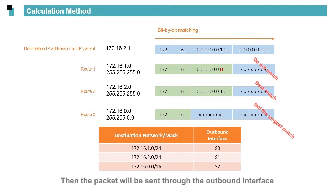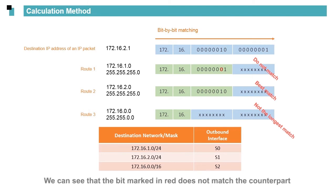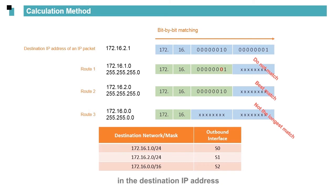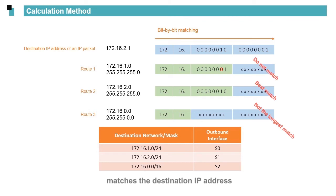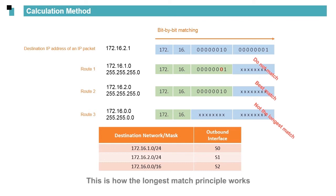Then we need to compare the binary destination IP address and the binary prefixes of the routes to locate the route whose prefix has the longest bits matching those of the destination IP address. Then the packet will be sent through the outbound interface of that route. In the figure, all the parts highlighted in green must match the counterpart in the destination IP address. We can see that the bit marked in red does not match, therefore Route 1 is not the one we are looking for. The prefix of the route on interface S1 best matches the destination IP address. If S1 encounters a physical fault, this packet is forwarded through S2, which has a route that matches but is not the best match. This is how the longest match principle works.